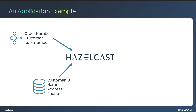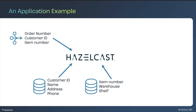HazelCast can receive this order and enhance the data with contextual information pulled from the data at rest. For example, retrieving the customer's shipping information from the customer database, then using the customer data to find the nearest warehouse, then locating the item within that warehouse to generate a complete order processing instruction that gets forwarded to the warehouse for picking and shipping.